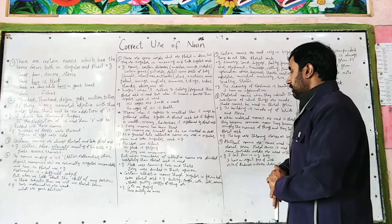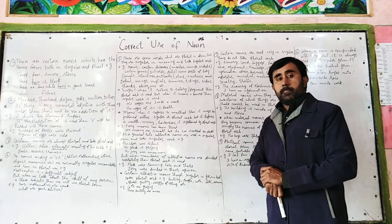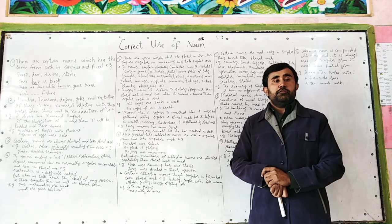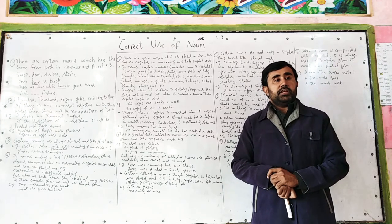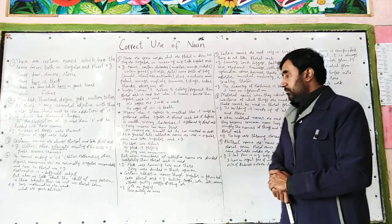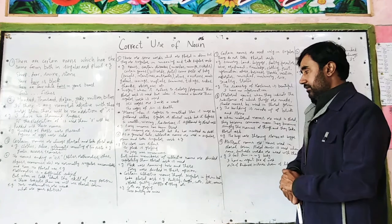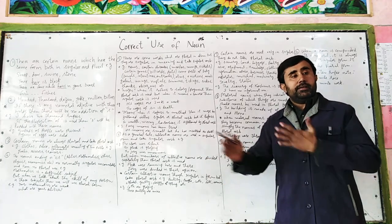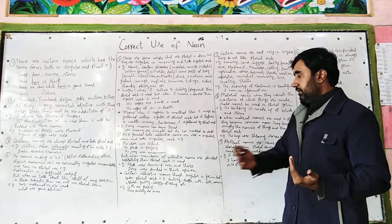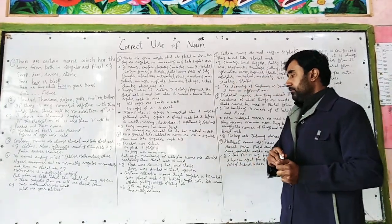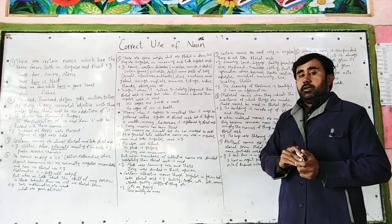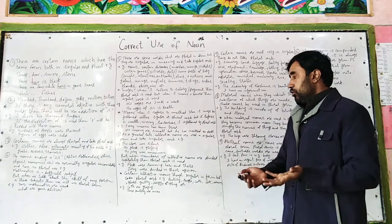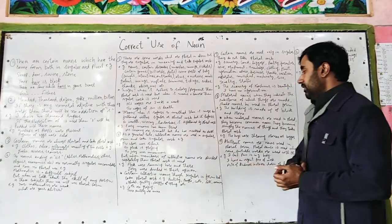But when the members of a collective noun are divided, then we use plural verb. For example: 'The flock were running here and there' — they are dispersed, so plural verb is used. In the same way: 'The jury were divided in their opinion' — the jury did not give a unanimous decision, they were divided, so we use plural verb.